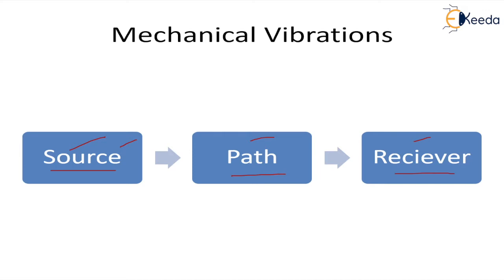The best way is to control vibration at the source. For that we can relocate the machine or replace it. Whatever is the reason for vibration — maybe imbalances or misalignment — that can be fixed, which can reduce the amount of vibrations.